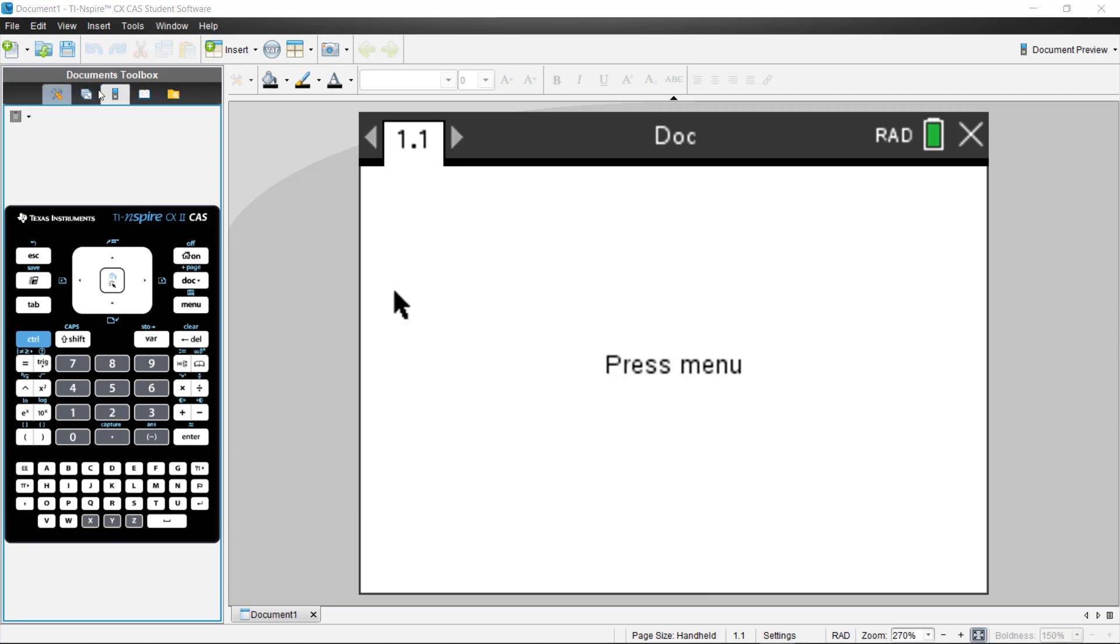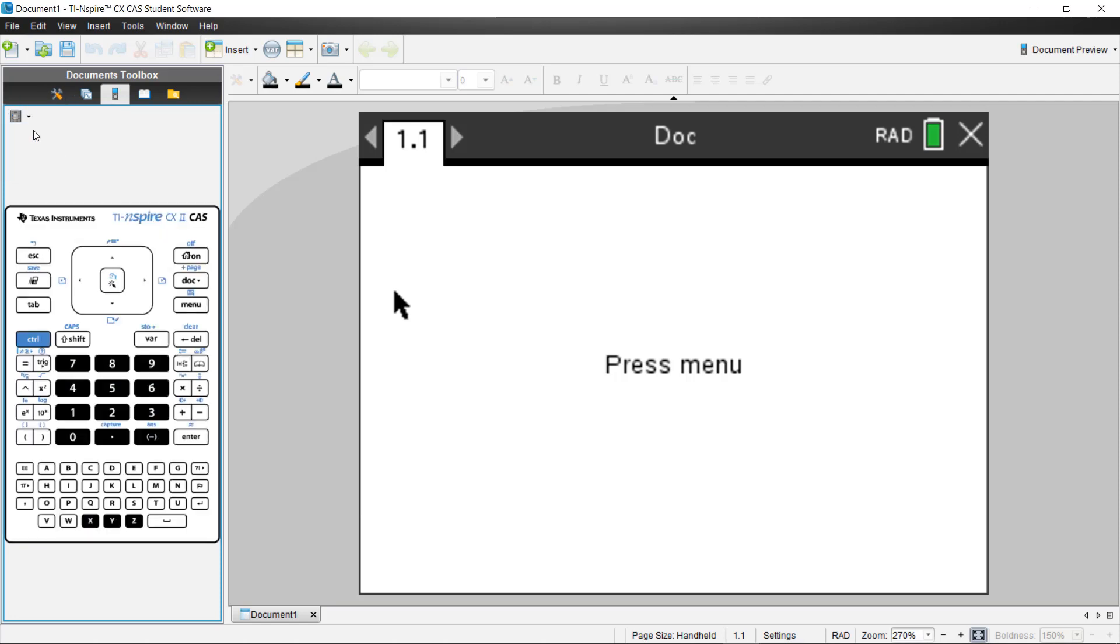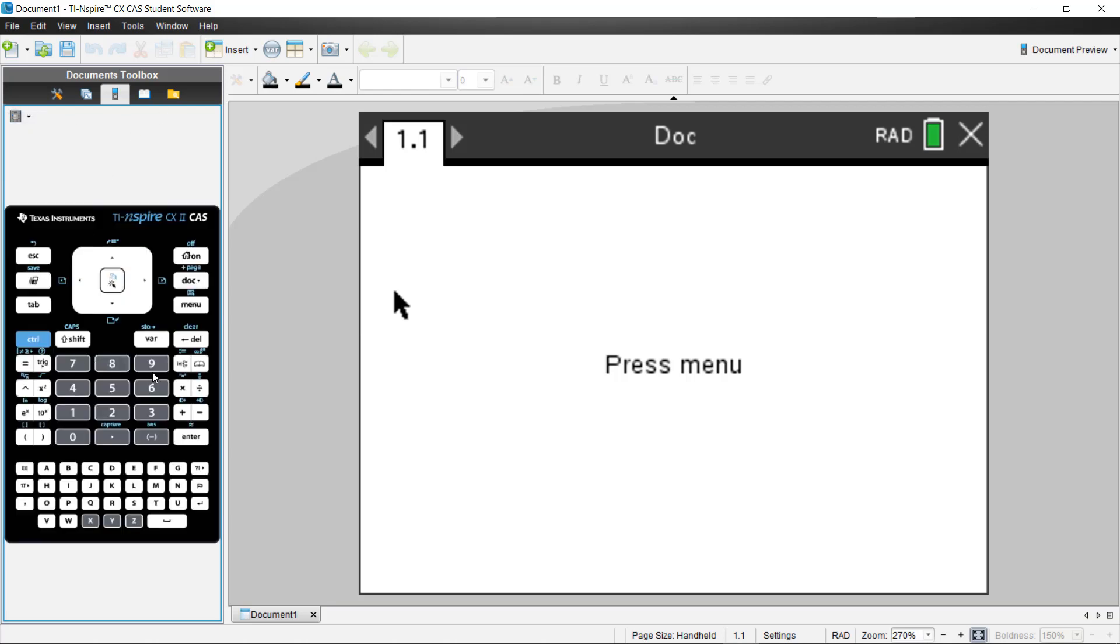There's this little documents toolbox here across the top. This is where you can select your emulator to get the right calculator for you. If you want to change the color of it from dark to light, or maybe even an outline version, you can definitely do that. I'm going to leave it dark here because it matches the CAS.